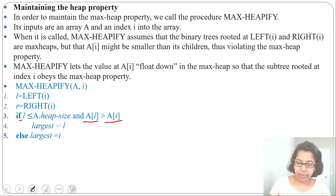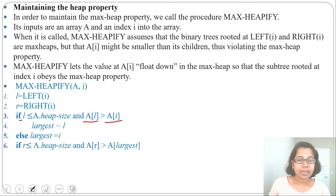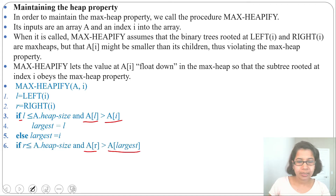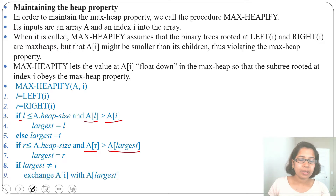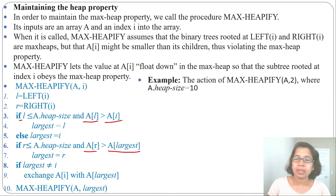We also need to check the right child: if R is less than A.heap-size and A[R] is greater than A[largest], then largest will be R. If largest is not equal to i — meaning the largest may be the left child or right child — then we exchange A[i] with A[largest]. After that we recursively call max heapify on A and largest.